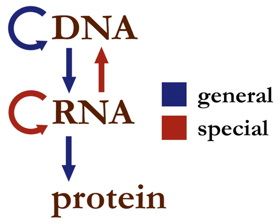DNA polymerase III reads the existing template chain from its 3' end to its 5' end and adds new complementary nucleotides from the 5' end to the 3' end of the daughter chain. DNA polymerase I removes the RNA primers and replaces them with DNA. DNA ligase joins the two Okazaki fragments with phosphodiester bonds to produce a continuous chain. This process typically takes place during S phase of the cell cycle.